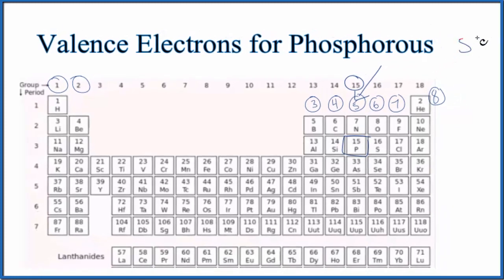So phosphorus has five valence electrons according to the periodic table. We could also write the electron configuration for phosphorus.